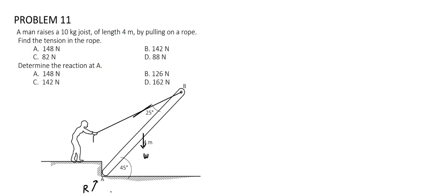Therefore, it is a three-force body system, and we can compute the forces by using the force triangle. First, we must note that W is equal to mass times the gravitational acceleration. This is equal to 10 kg times 9.81 m per second squared, which is equal to 98.1 N.